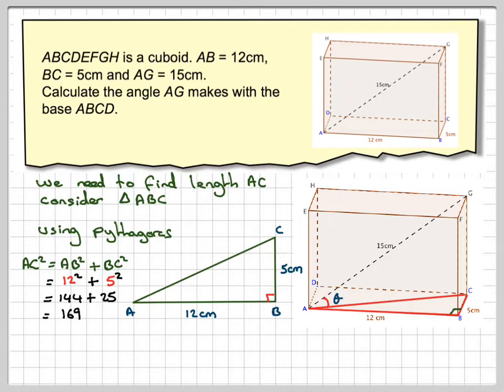Now this gives me the square. I need to find the length. So AC will be the square root of 169, which is equal to 13 cm.